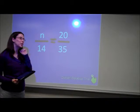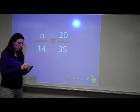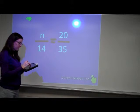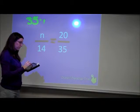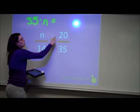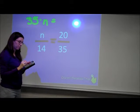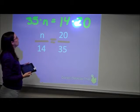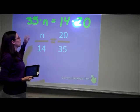If you say cross products, you're correct. So, first cross product would be 35 times n is equal to 14 times 20. So we have 35 times n equals 14 times 20.